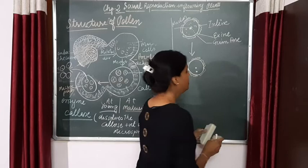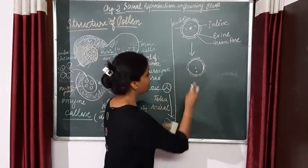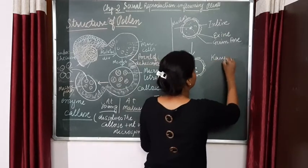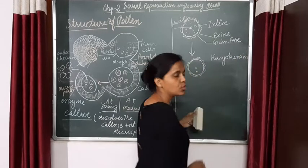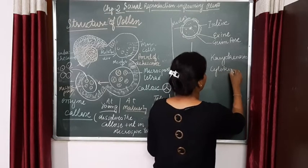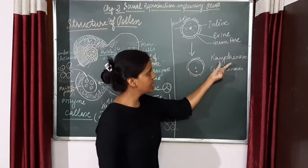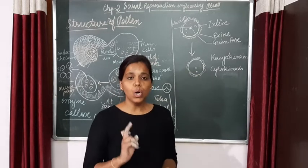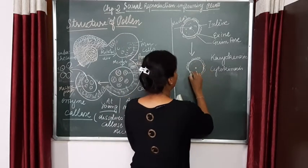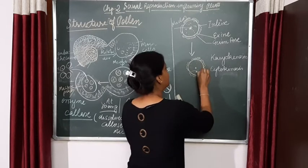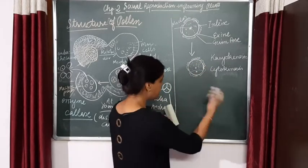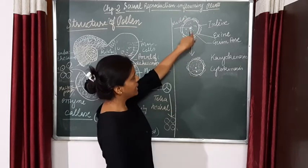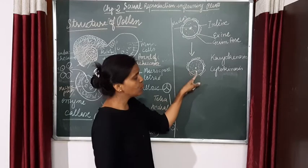Coming to the division: the nucleus is going to divide and it is going to form two cells — two gametes. The nucleus dividing is karyokinesis, that is the division of the nucleus, and then cytokinesis — the division of cytoplasm — takes place. The karyokinesis division is equational and the two nuclei formed are equal, but cytokinesis, the division of cytoplasm, is not equal.